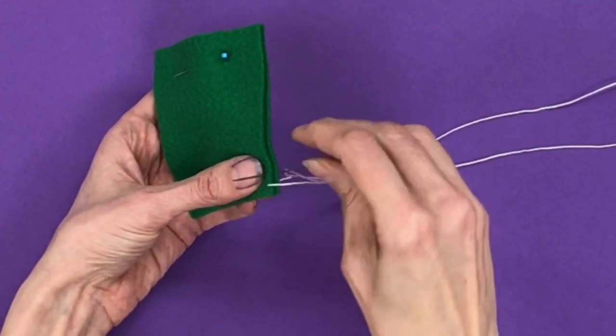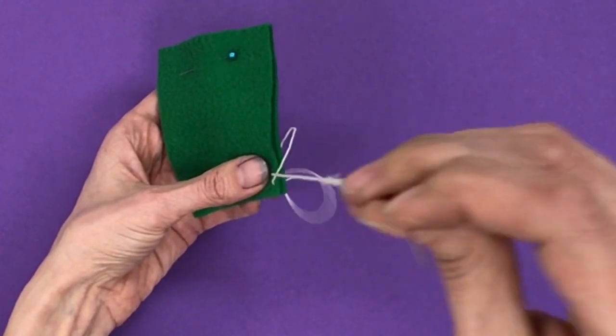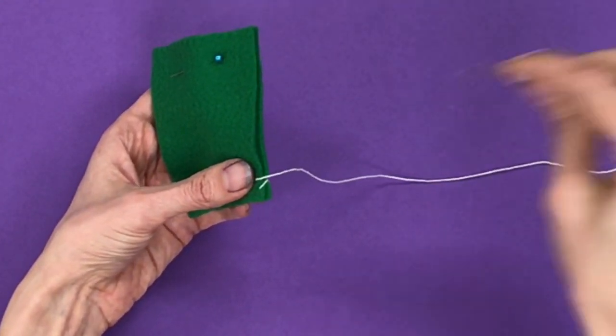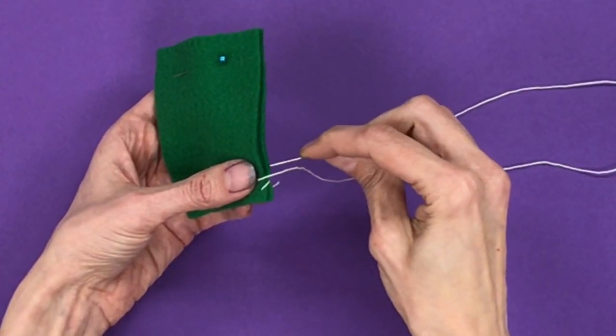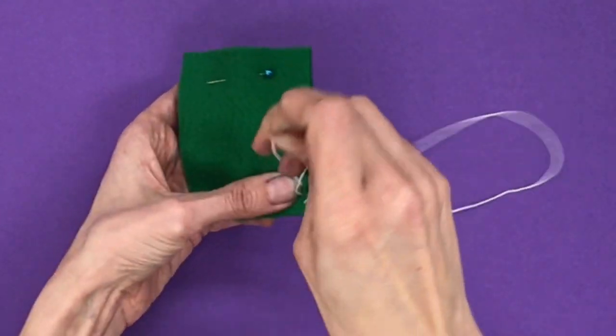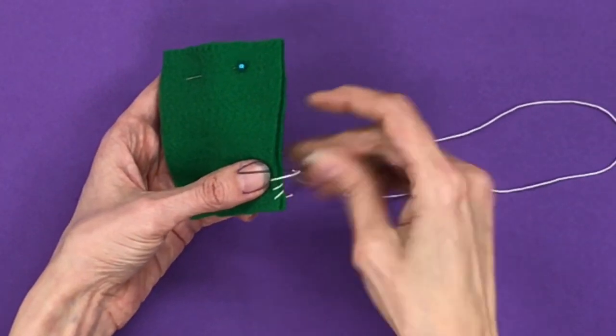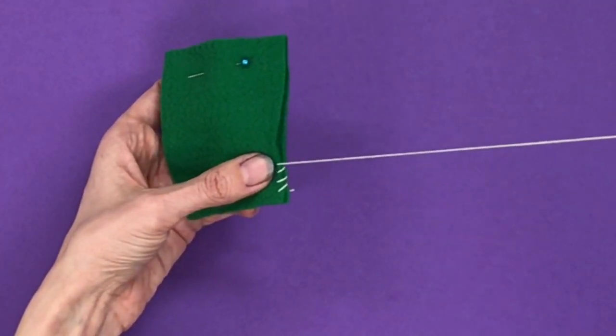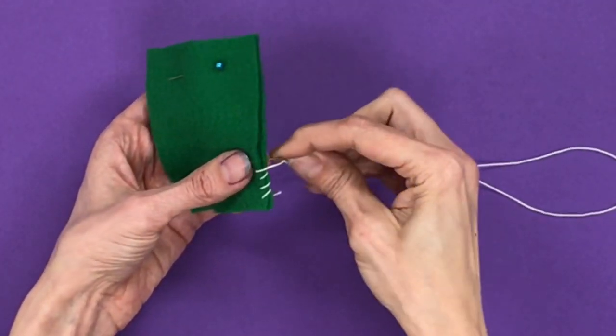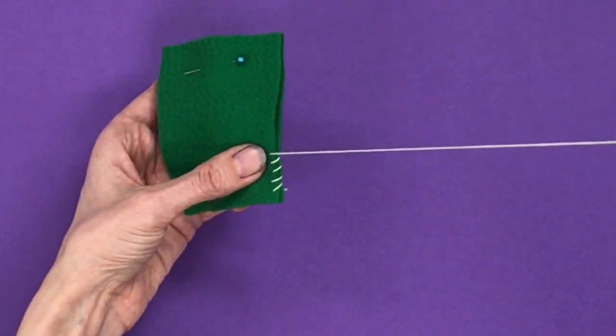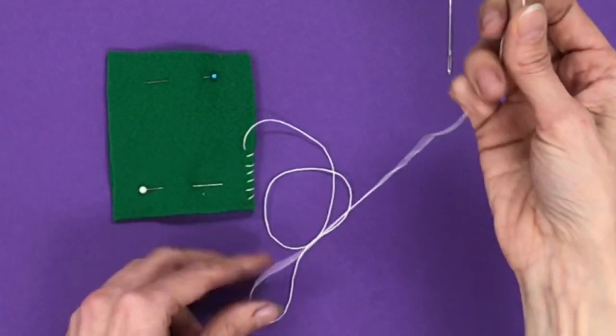I'm going to be doing something called a whip stitch. A whip stitch goes around the fabric. Notice how my needle always comes up. Notice how I'm making sure that the needle goes through both pieces of fabric, because my goal is to stitch the two pieces of fabric together. The reason I pinch the eye is so that the thread doesn't fall out.